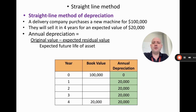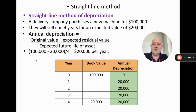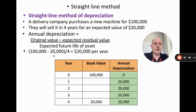The annual depreciation is the original value minus the expected residual value divided by the life. The original value is $100,000. The residual value is $20,000 — the price they're going to sell it for. The expected future life is four years. So we do 100 minus 20 divided by 4, which gives us $20,000 per year. We can then put that into the table because every year the depreciation is going to be $20,000.